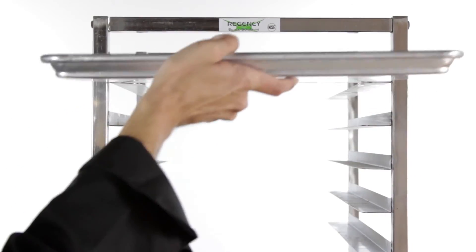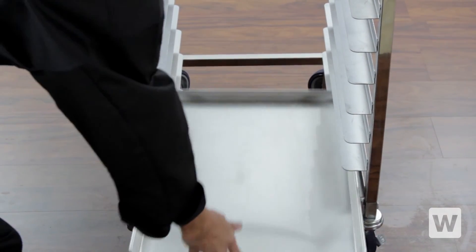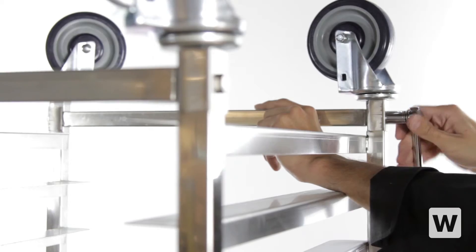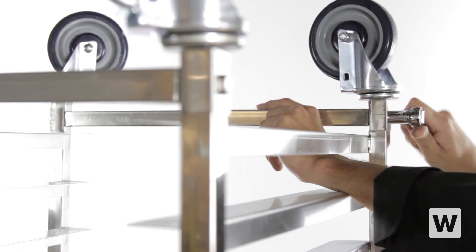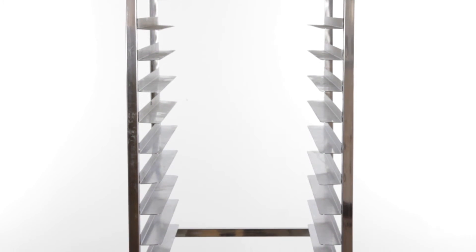Put a bun pan in both the top and bottom slots of the rack to make sure your bun pan rack is level. Finally, tighten each bolt with a wrench. Your bun pan rack is now ready to use.